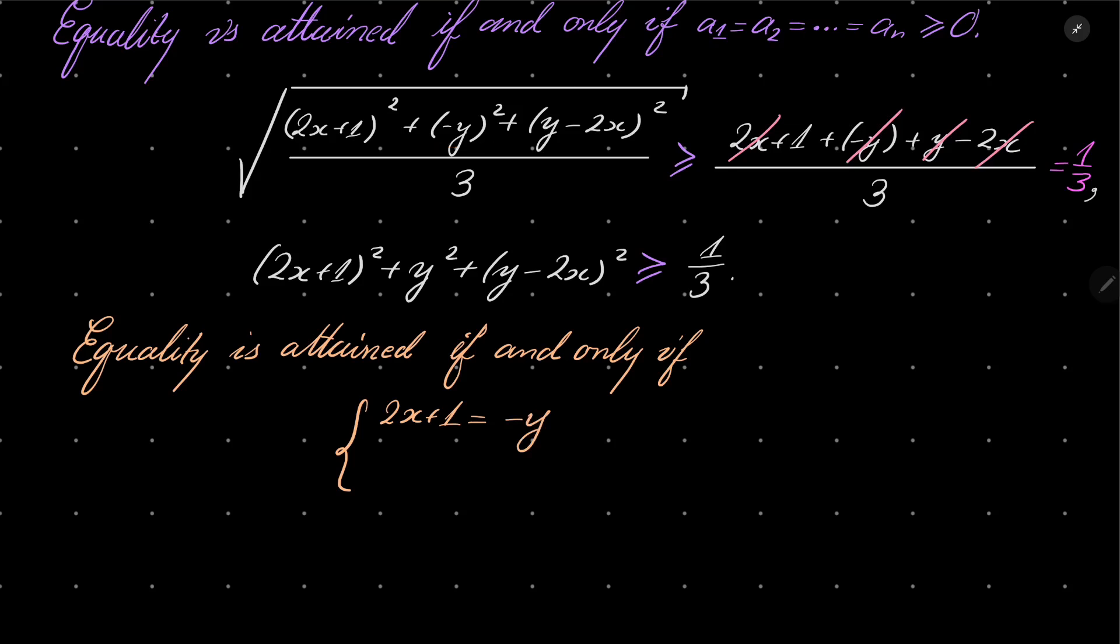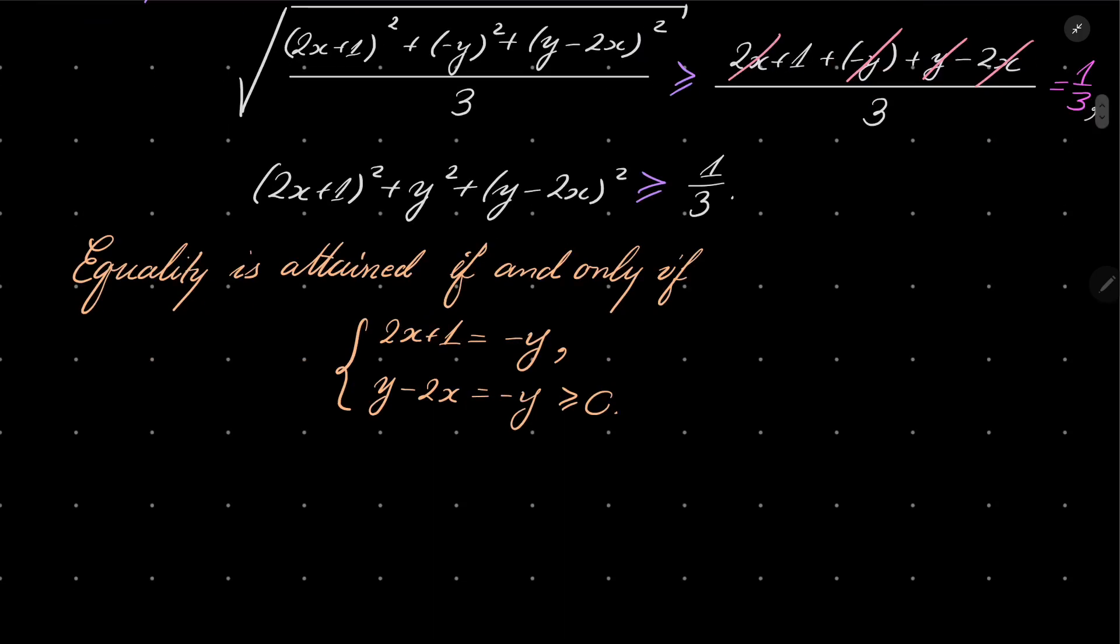That's -y. And y - 2x equals -1 as well. And moreover, each of these numbers must be greater than or equal to zero, so we can write it here. And now let's solve it from the last condition.